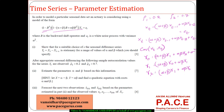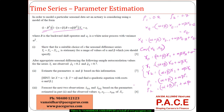Dividing by gamma0 converts these into correlations. So rho1 = (alpha + beta) + alpha*beta*rho1, and rho2 = (alpha + beta)*rho1 + alpha*beta. These are the two expressions relating the autocorrelations to the parameters.